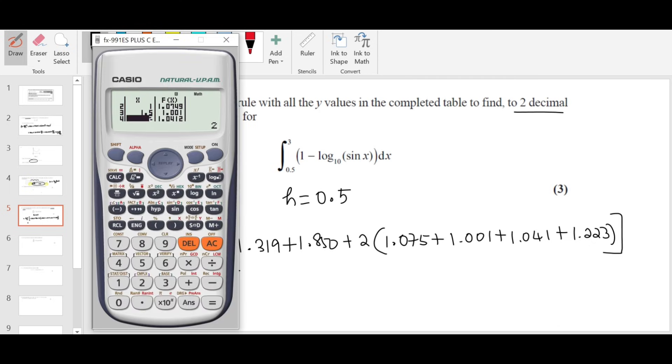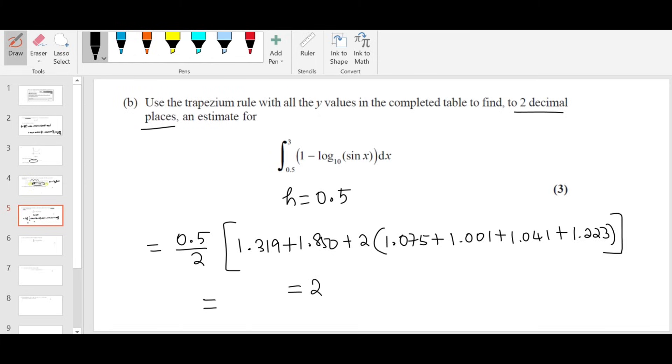You calculate this and round it to two decimal places. So I'm going to use my calculator to do it. H divided by 2 times the first y value 1.319 plus the last y value 1.850 plus 2 times 1.075 plus 1.001 plus 1.041 plus 1.223, close bracket. They want the answer to two decimal places. It's 2.96 is the answer.